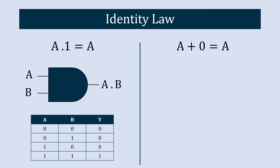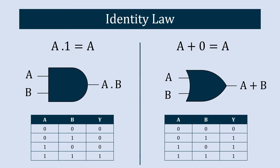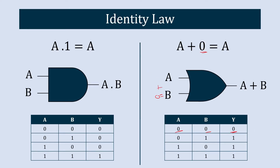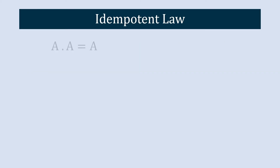The next identity law is A plus 0 equals A. Here we use an OR gate with B equal to zero. When A is 0, zero plus zero gives zero in output. When A is 1, zero plus one gives one in output. In both cases the value of the variable remains unchanged after the operation.